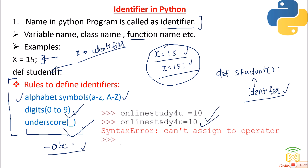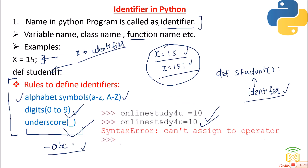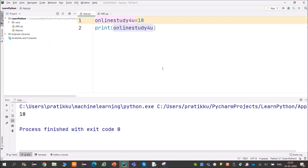Moving to the next rule: identifiers should not start with digits. You can use digits 0–9 in an identifier, but your identifier cannot start with a digit. You'll get a syntax error: 'invalid syntax.' However, digits can appear after the first character.